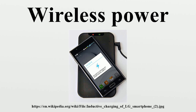In general, a wireless power system consists of a transmitter device connected to a source of power such as mains power lines, which converts the power to a time-varying electromagnetic field, and one or more receiver devices which receive the power and convert it back to DC or AC electric power consumed by an electrical load.